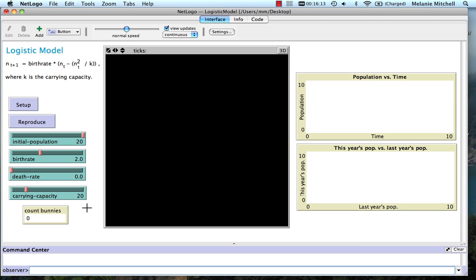There's also a slider for carrying capacity, which is the scientific name for the maximum population that the habitat can support. Okay, so let's set the initial population here to 1, the birth rate to 2.0, let's leave the death rate at 0, and let's set the carrying capacity to 50. Do setup.